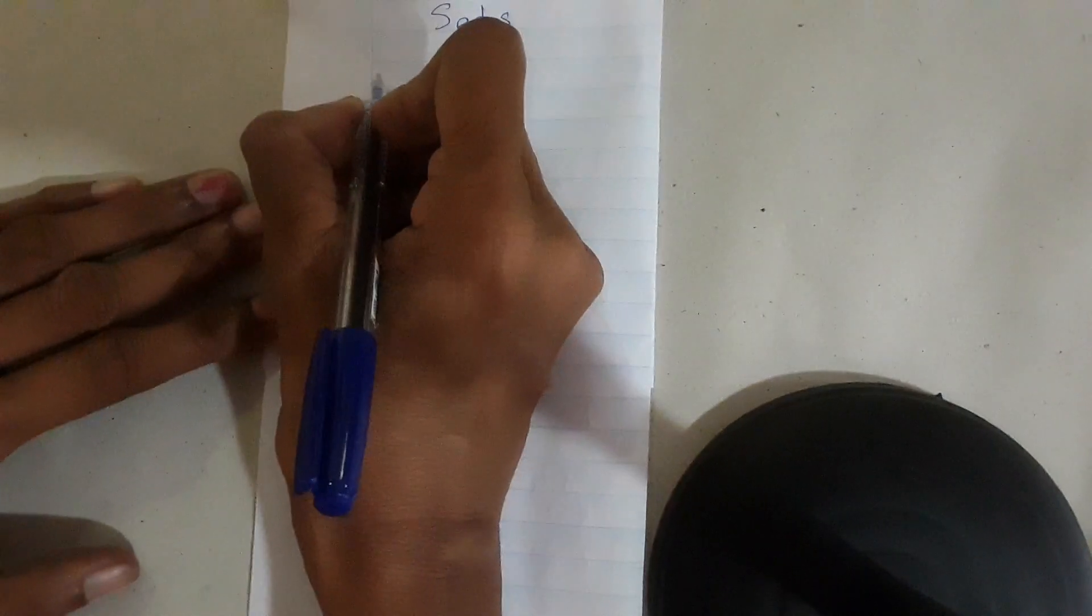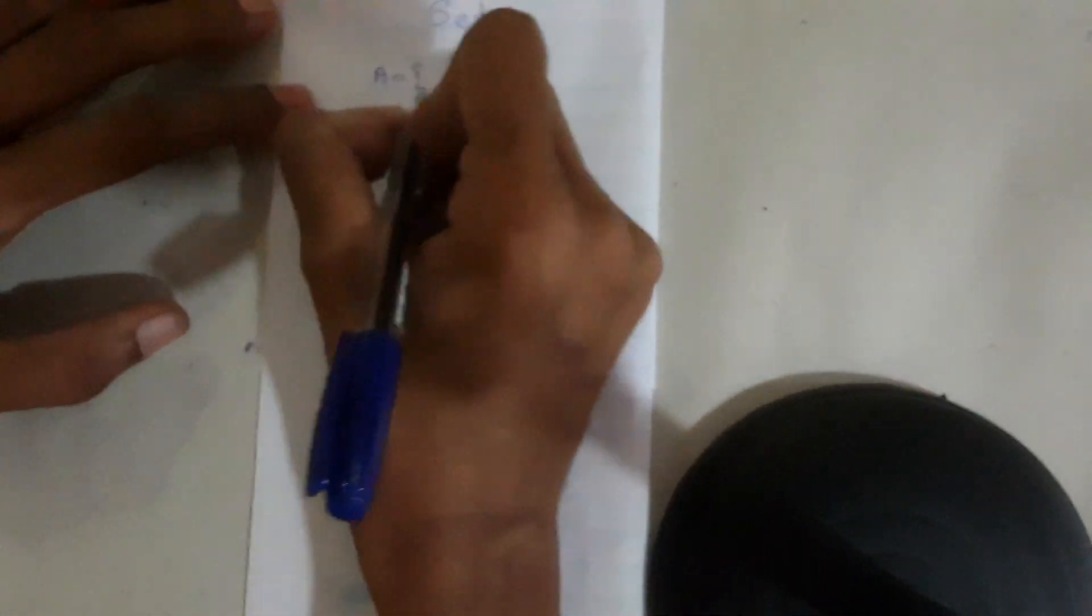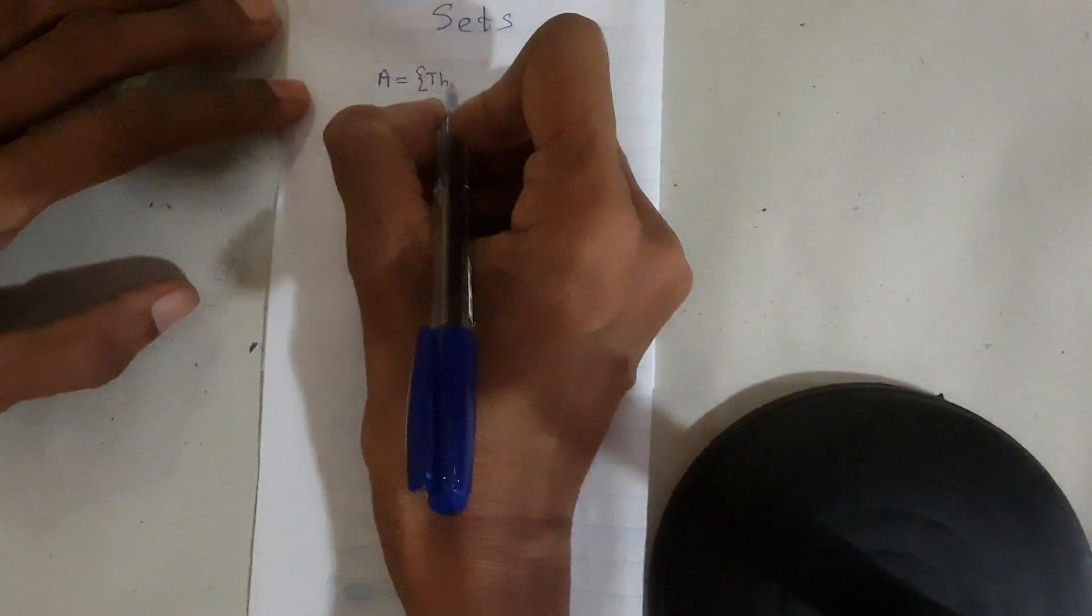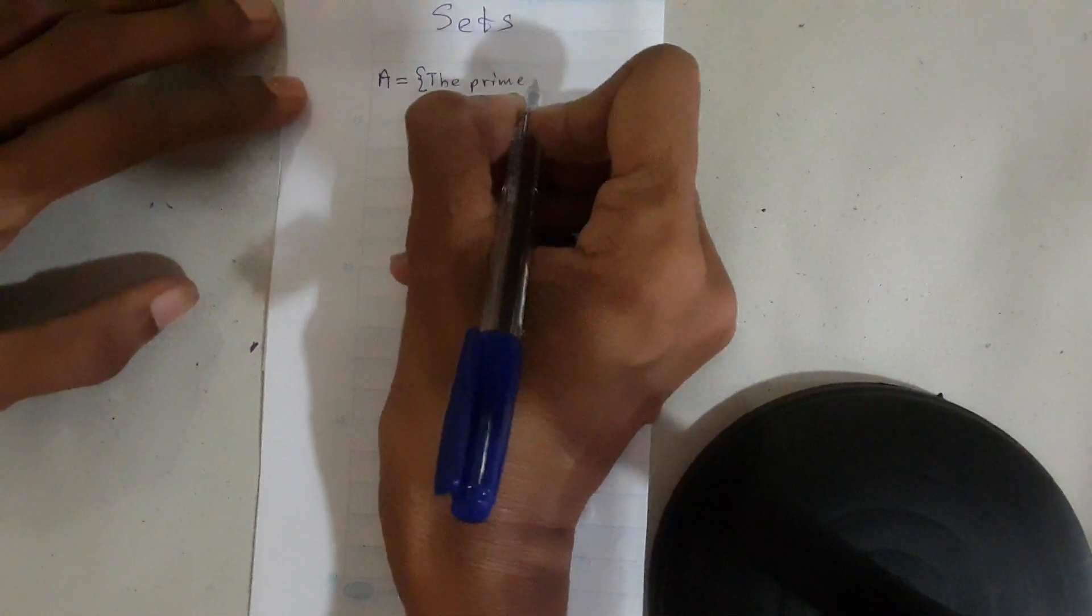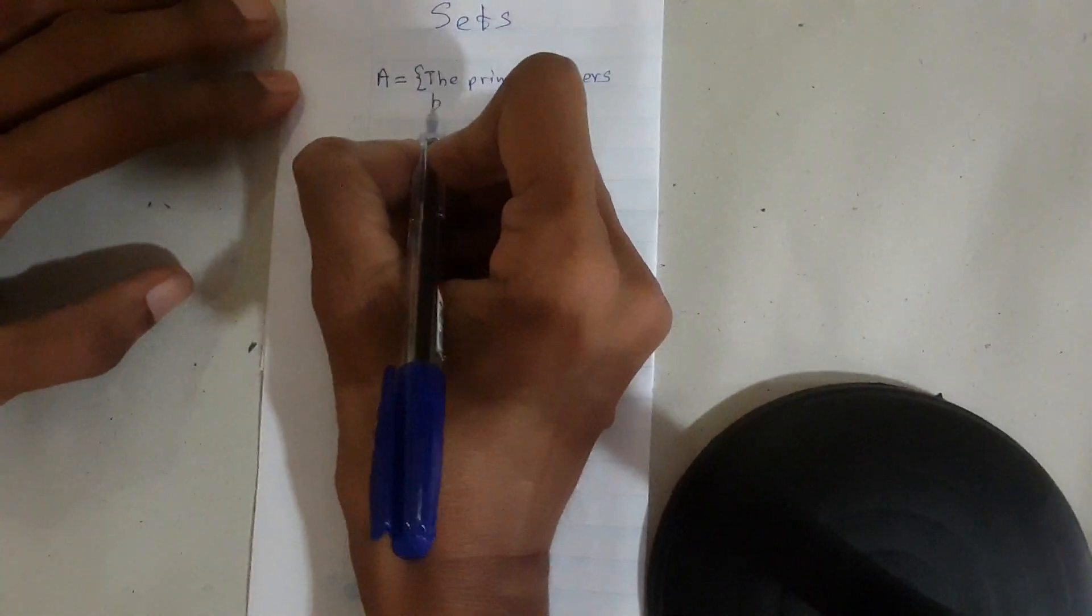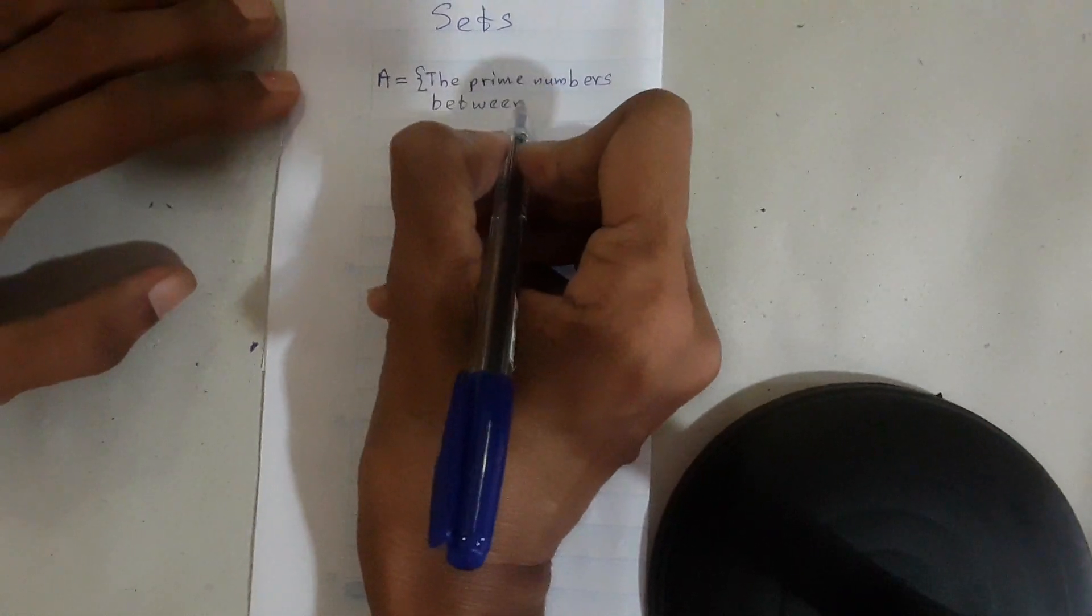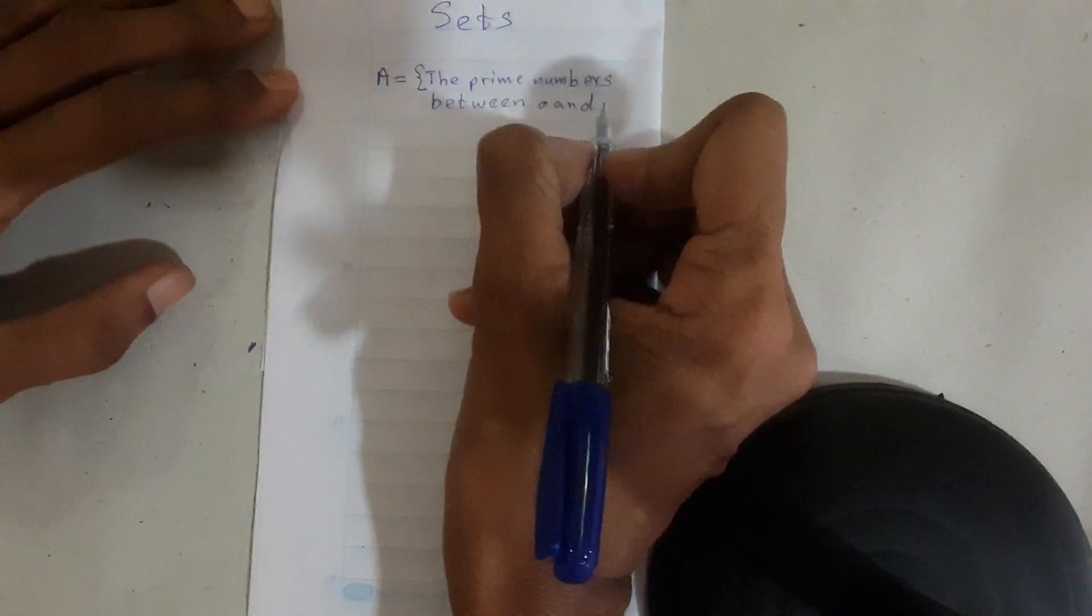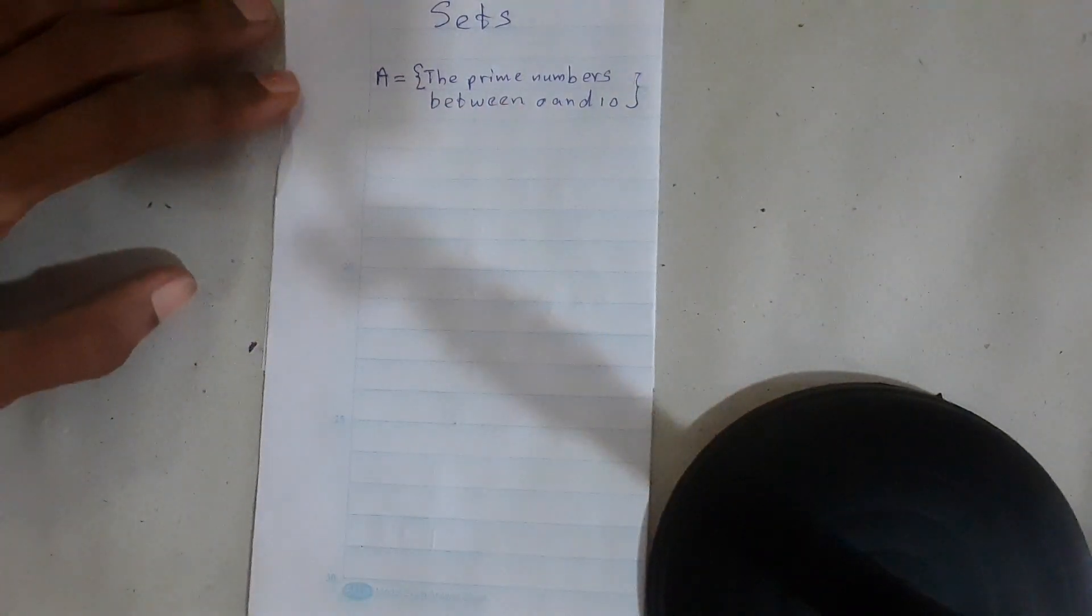In grade 9, we learnt three types of methods to represent a set. The first method is describing a set using its common characteristic. For example, set A is the prime numbers between 0 and 10.